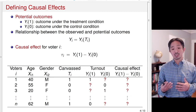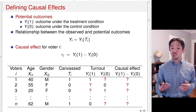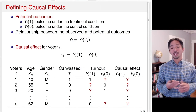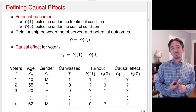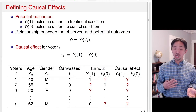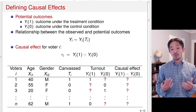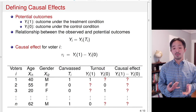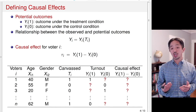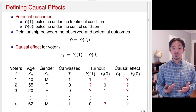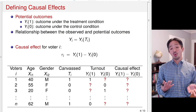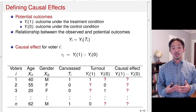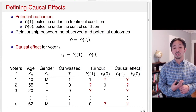For the first voter, who was canvassed, we observe Y(1). Unfortunately, we don't observe Y(0) because we would not know what this voter would have done if he had not been canvassed — so Y(0) is unobserved. Because Y(0) is unobserved, the difference between the two — that's the causal effect — is also not observed. For the second voter, who is 55 years old and female, she was not canvassed, so we observe Y(0) which equals 0 — she did not vote. But we don't know what she would have done if she were actually canvassed. So only one of the potential outcomes is observed for each voter.